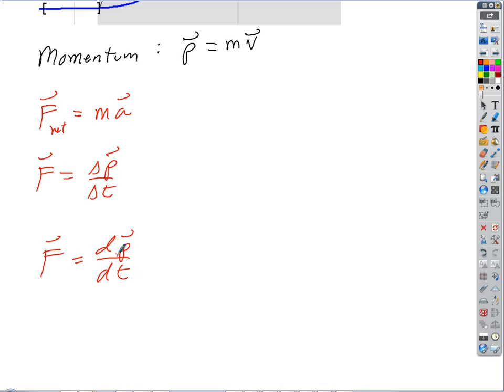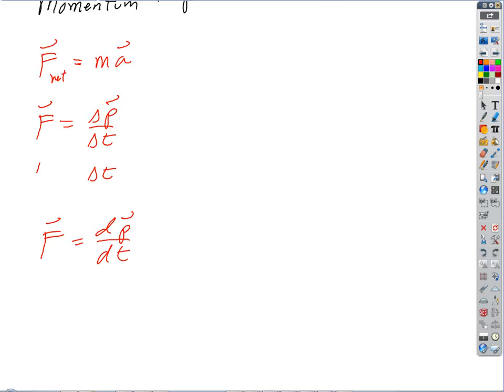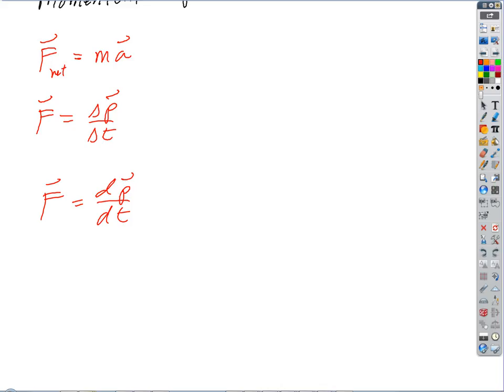These are essentially the same thing. Only difference is, in calculus, we can deal with functions that are curvy, and in here we have to deal with functions that have straight lines. Their accelerations are constant. Calculus, they don't have to be. Those of you that are in calculus, how do we deal with this? If momentum is defined as M times V, how would we take this derivative?